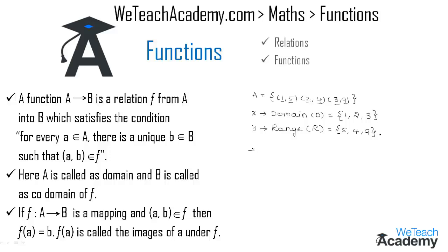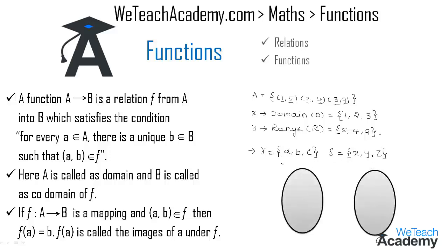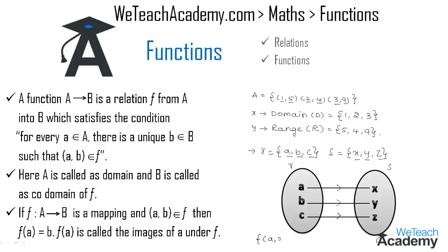Let me explain this concept with an example. We have elements of set R as a, b, c and elements of set S as x, y, z. Let us represent both sets in the form of a Venn diagram and map the elements of R with the elements of S. Here a is mapped with x, b with y, and c with z. So we get the ordered pairs as (a, x), (b, y), and (c, z).